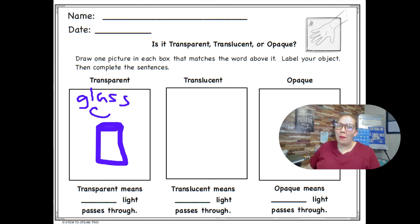It's hard to write with a mouse sometimes. Glass cup. I'm going to fill in the blank. Transparent means blank light passes through.